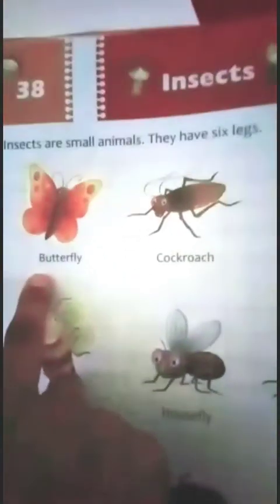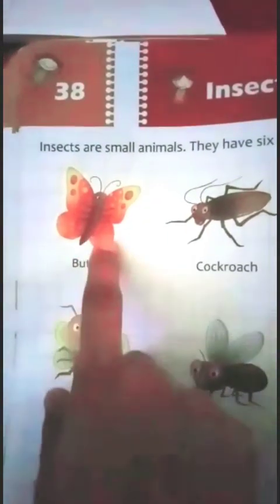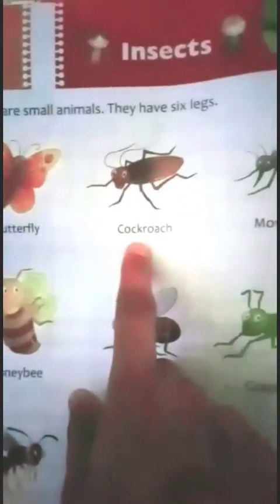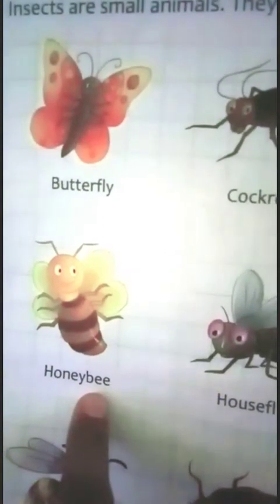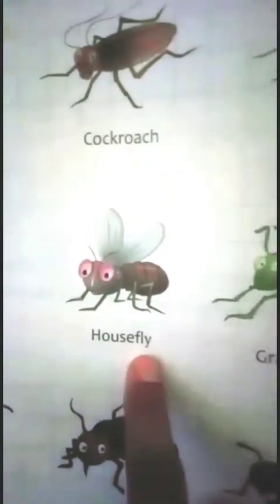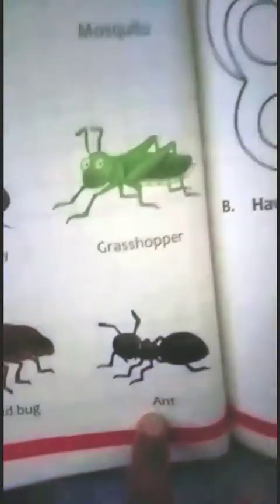Now see — first one is a beautiful butterfly. Second one, you can see cockroach. Third one, you can see mosquito. Next one is honey bee. Next one is a housefly. Next one is grasshopper. Next one is wasp. Next one is bedbug. And last one is ants.